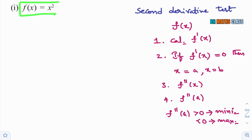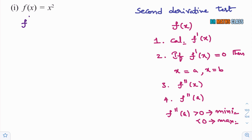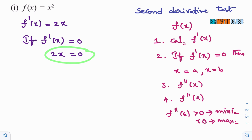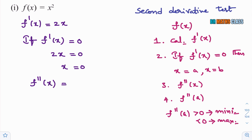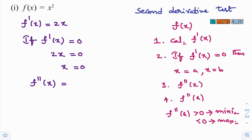Now we need to find local maxima and local minima of f(x) = x². In step 1, we calculate f'(x). The derivative of x² is 2x. In step 2, we equate f'(x) to 0, so 2x = 0, which gives x = 0. We got only one x value. Now we calculate f''(x) by differentiating f'(x) = 2x. The derivative of 2x is 2.